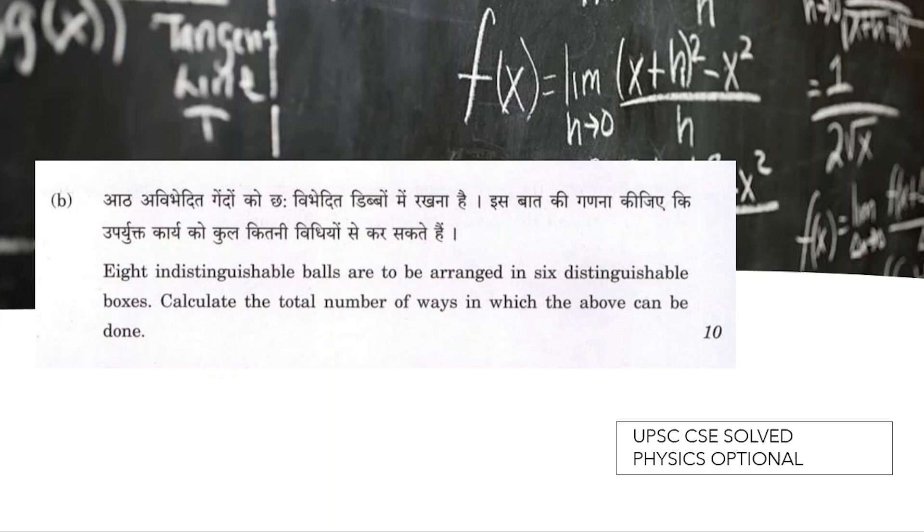These two words are the most important thing in the question. We have to calculate the total number of ways that the system can be arranged. Before starting, we have to differentiate what type of statistics we are going to use in this question to solve it.